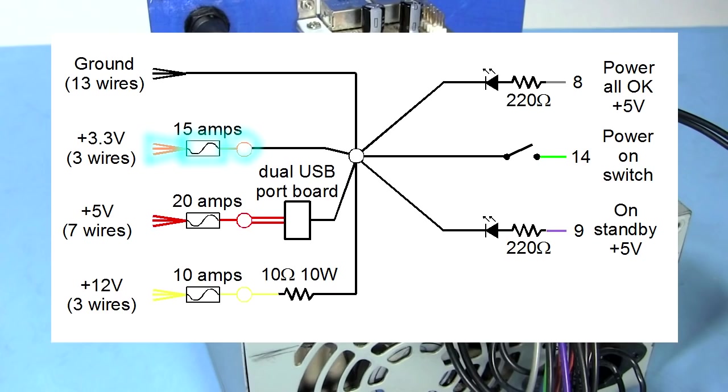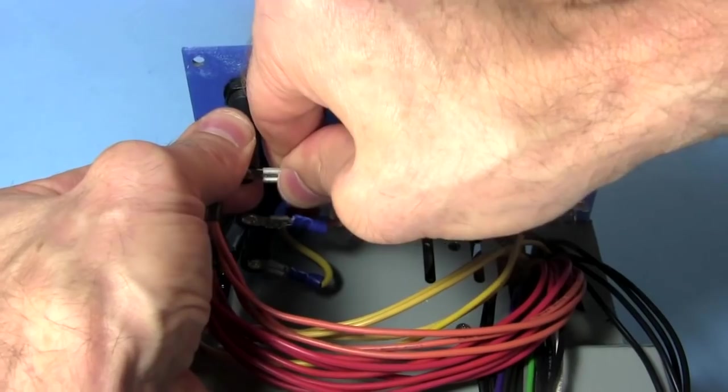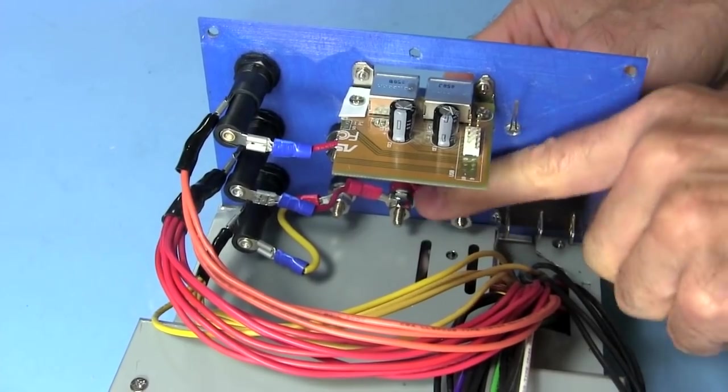And then I repeat all that again for the 3.3 volt fuse and binding post. This time it's the orange wires which I connect to the fuse and then the fuse to the remaining binding post on the bottom.